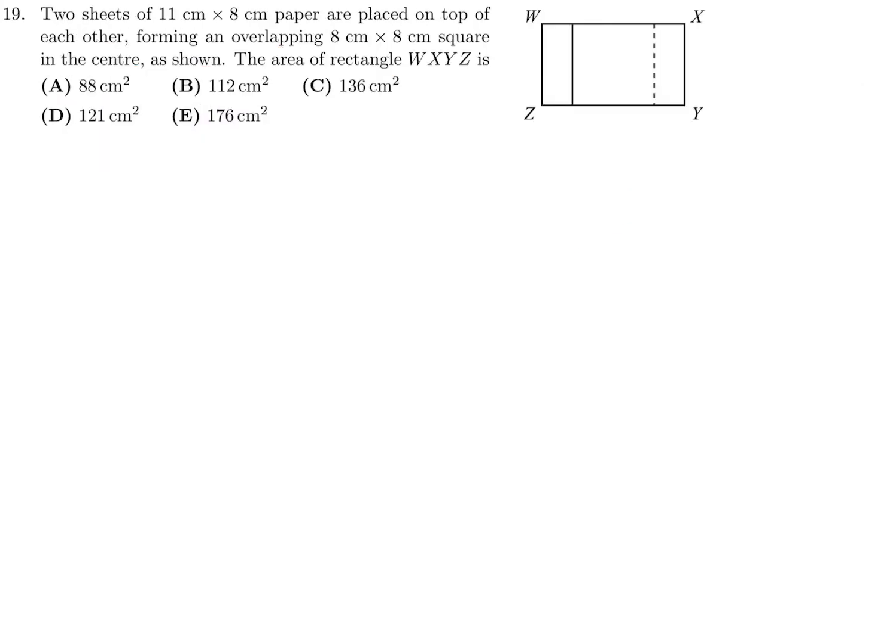Two sheets of 11 by 8 paper are placed on top of each other forming an overlapping 8 by 8 square in the center as shown. The area of the rectangle WXYZ is... So 11 by 8: this is 8 and this is 8. And then they're saying that the square is also 8 - this is going to be 8 and this is 8, this is 8 and this is 8 from there to there. So since it was an 11 by 8, that means this is going to be 3, and that distance also has to be 3 since that represents part of the other piece of paper.